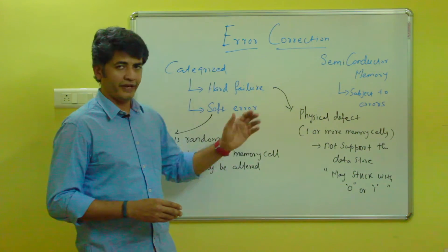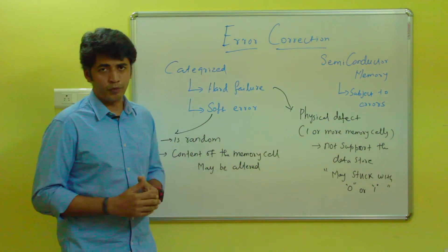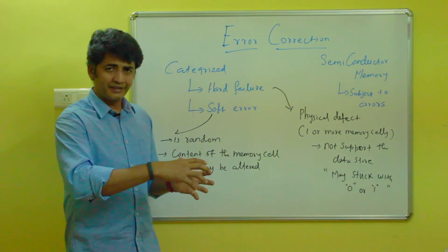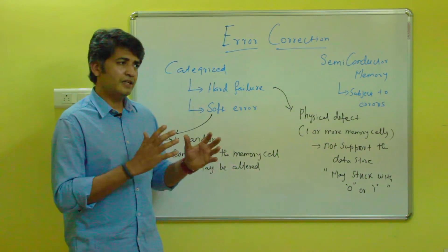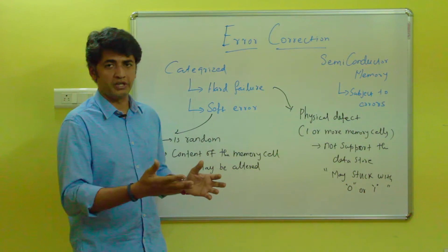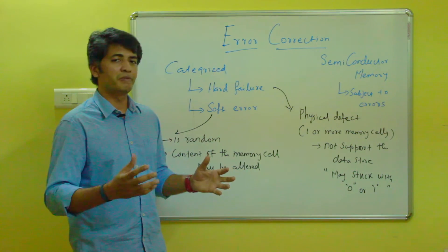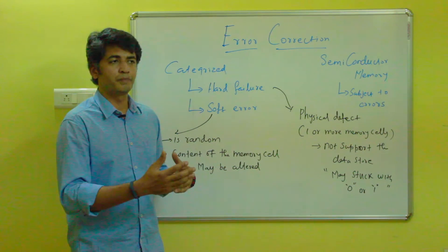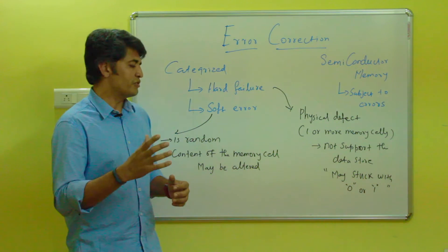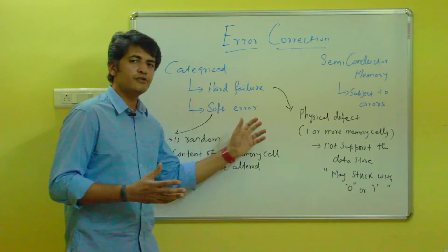The second type is soft error, which is a random one. If the user is storing data into a memory cell, after storing the data the content may be changed because of any unwanted access, unwanted program execution, or something like that. So the content of the memory may change, and that particular error is called a soft error.